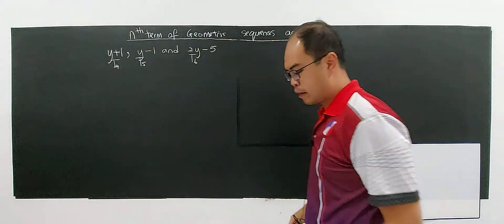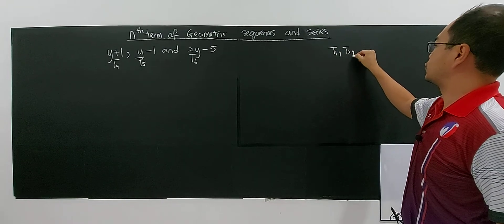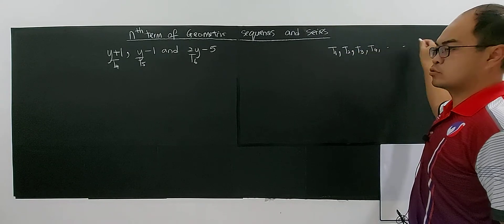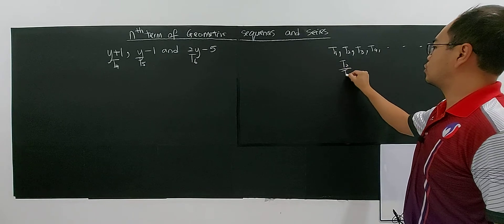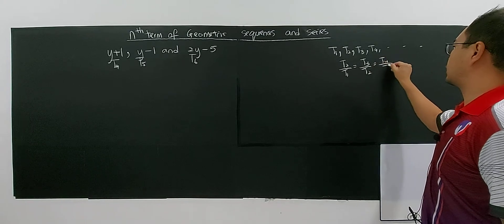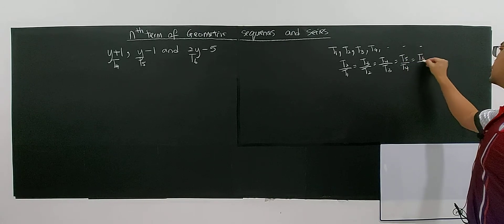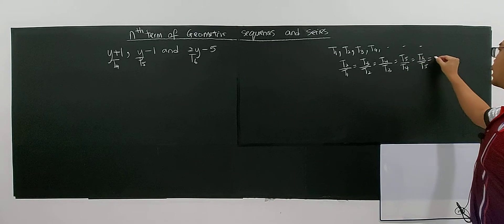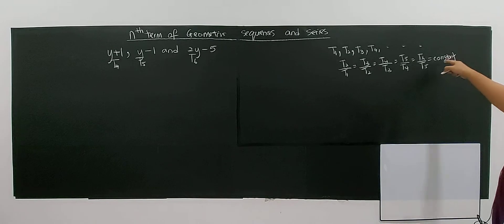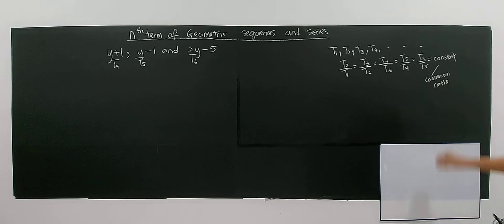You have to remember the properties of a geometric sequence. If you have t1, t2, t3, t4, and so on, you know that t2 over t1, t3 over t2, t4 over t3, t5 over t4, t6 over t5 — all of these are constant. This constant is named as the common ratio.